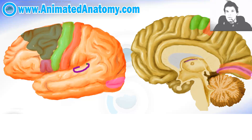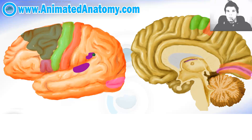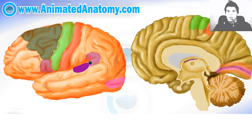This part of the cortex is important for receiving the auditory signal — not for perception of the signal, but just receiving the signal itself. And this gyrus here is called the supramarginal gyrus and this area is important for understanding speech. So here you receive the auditory signal and this area understands the speech. If there is a stroke or this part of the brain is damaged, the patient will be able to receive the signal but he won't be able to understand what is being told to him.